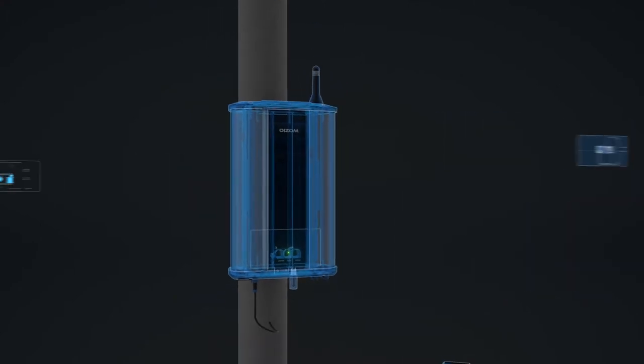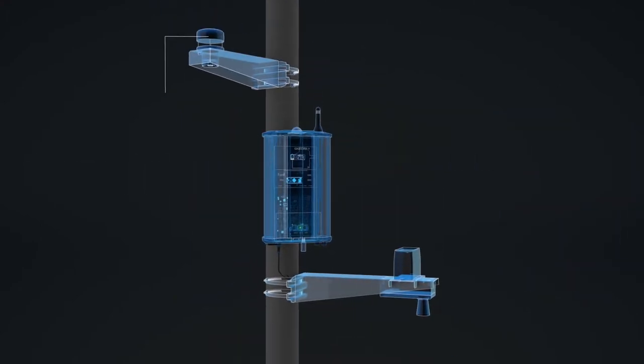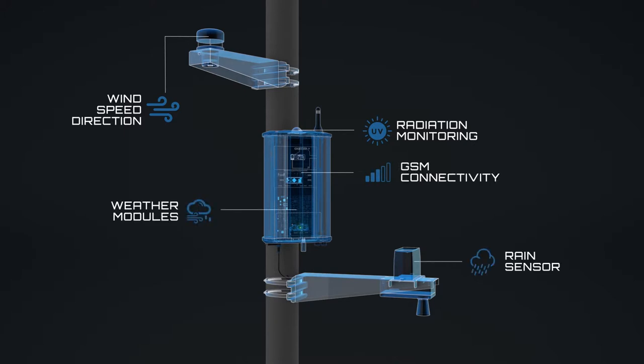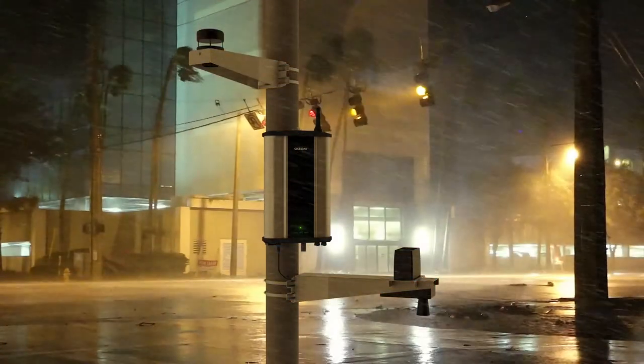By adding some external modules, it becomes an automatic weather station. Using our external modules, it can also measure flood level, road visibility, road surface condition, soil humidity and a lot more.